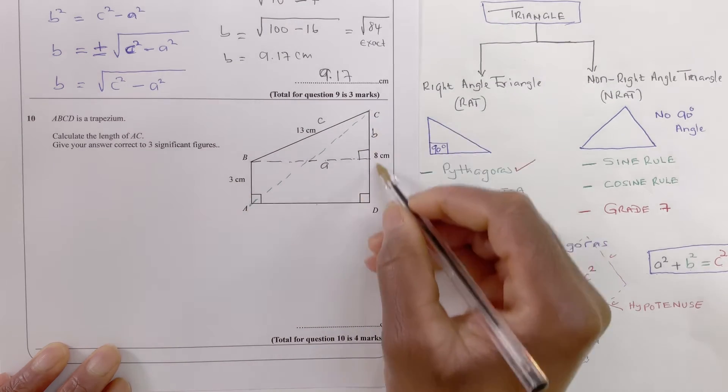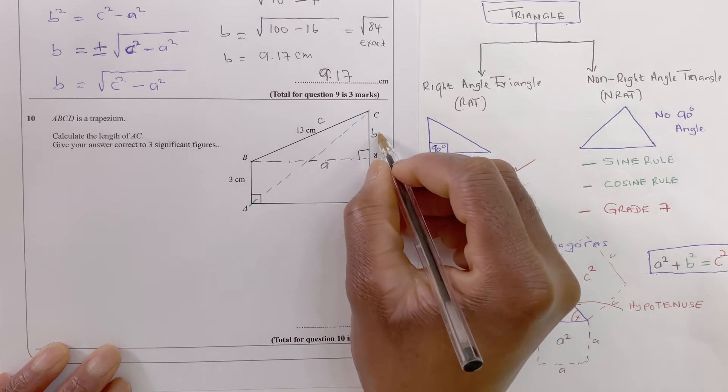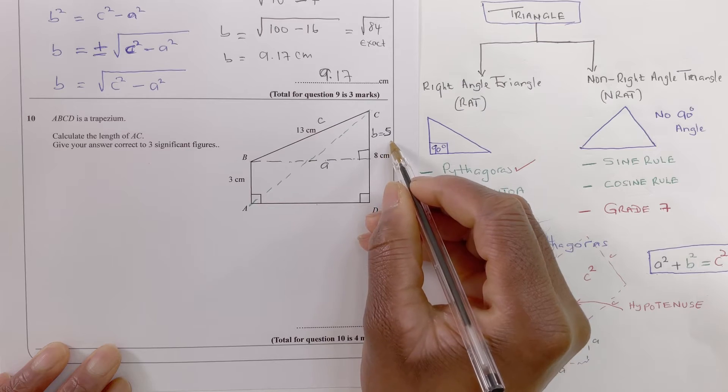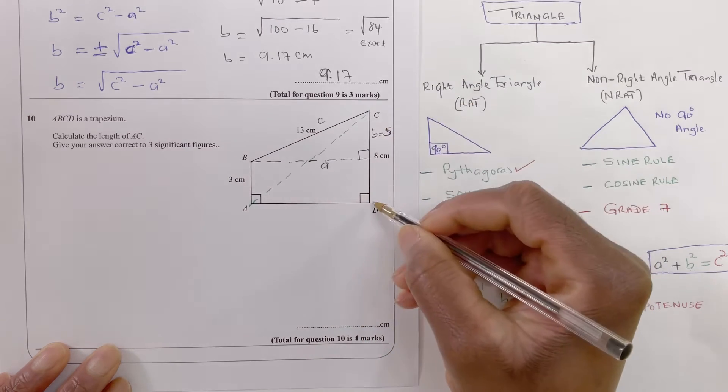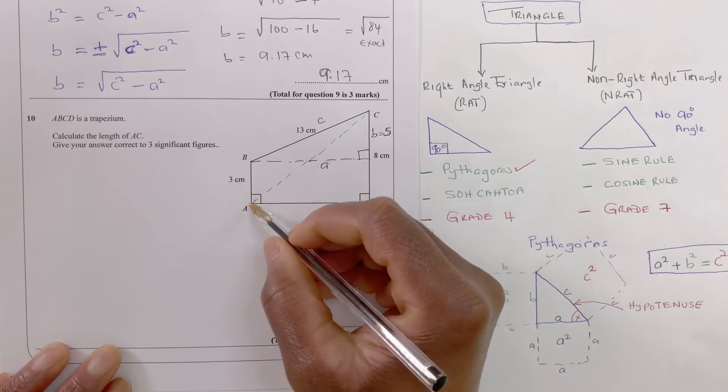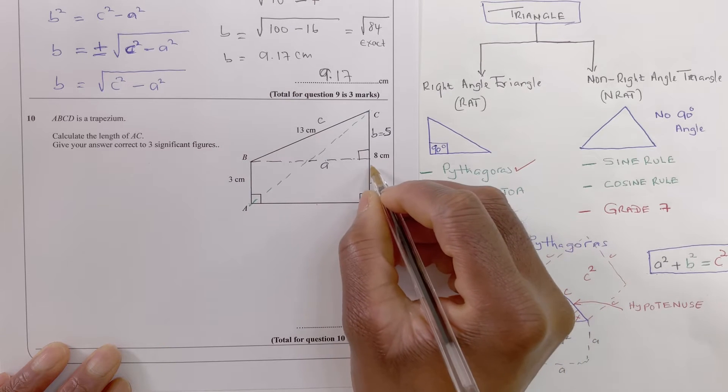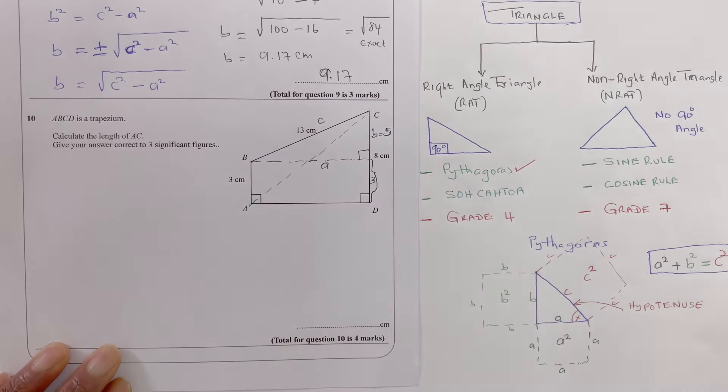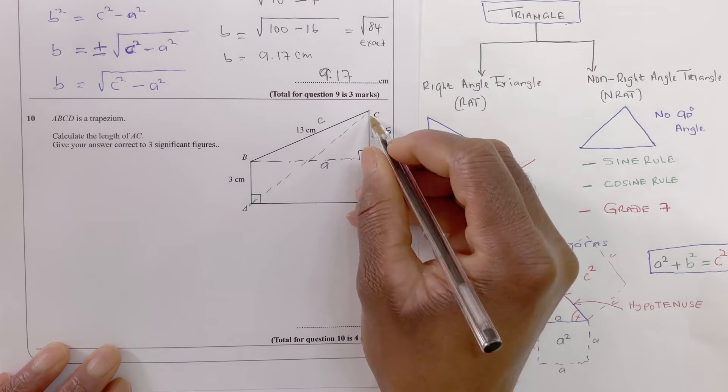I know what that value would be because I know this is three and the whole thing is eight so that has to be five. So that's five because the whole thing is eight and this bit here is three, that means that bit is three. So that's three, that's three, and that means that has to be five.